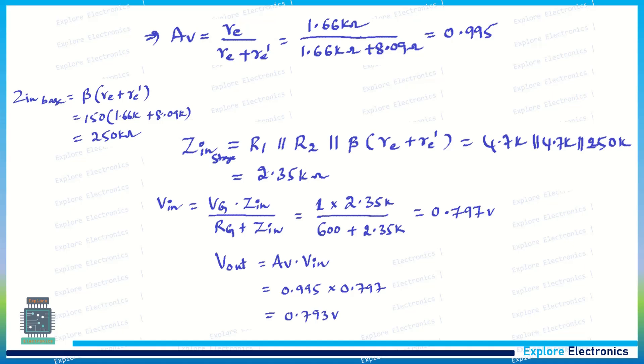Put all the values we calculated; it gives 2.35kΩ. Now we need to calculate the input voltage also. Input voltage with respect to Vg: Vg is 1V and Zin we have calculated as 2.35, divided by the resistance Rg plus the input impedance.